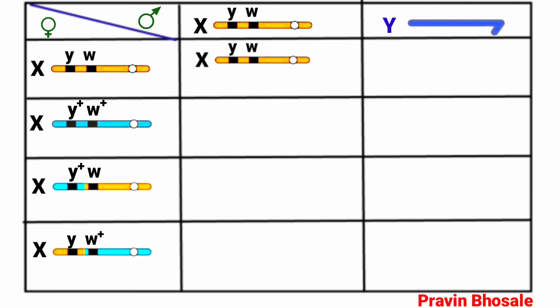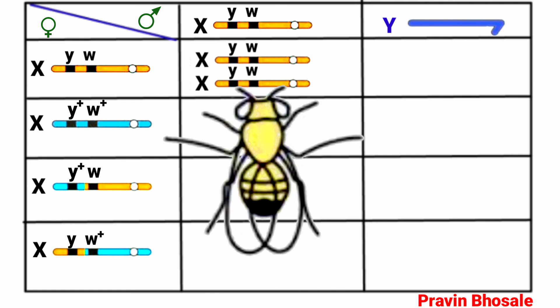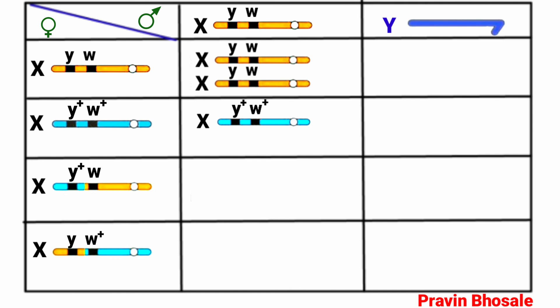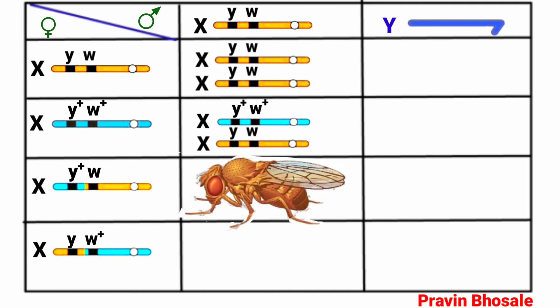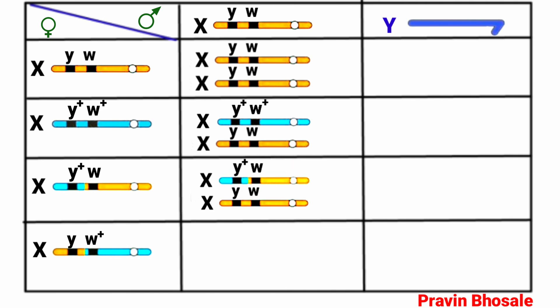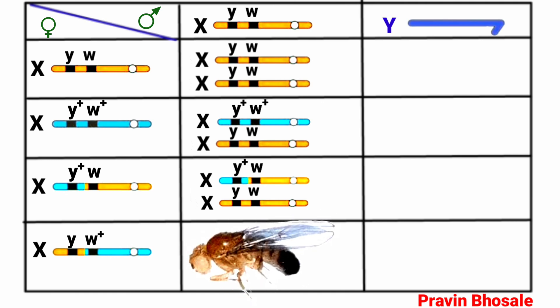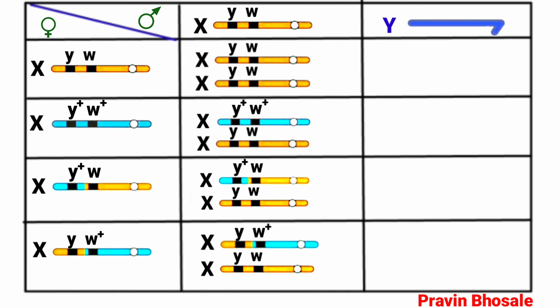Among the female offspring: one combination gives XX with small y/small w and small y/small w — yellow body and white eye. Another gives XX with y/w and y+/w+ — brown body and red eye, the wild type. A third combination gives XX with y+ and w — y+ is dominant — so brown body and white eye. A fourth gives XX with small y and w+ — dominant gene for eye color — so yellow body and red eye. These are all females.